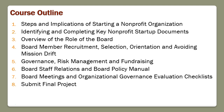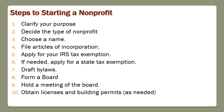Week six covers board and staff relations and a board policy manual. Week seven goes through board meetings and an organizational governance evaluation checklist — that's when you'll submit the rough draft of your final project. In week eight you submit your final project. Starting into week one, there are ten steps in starting a nonprofit, and we'll have readings and videos to take you through those steps.